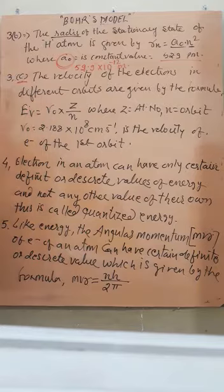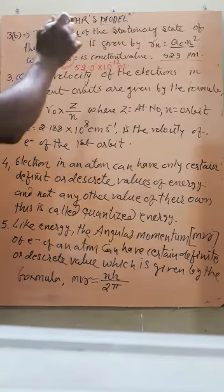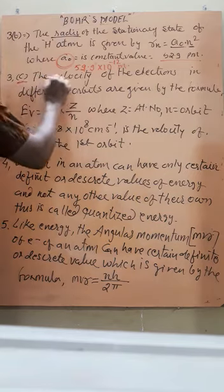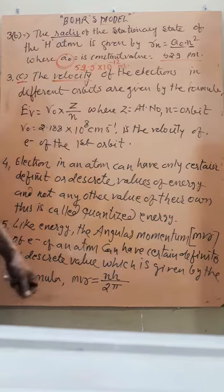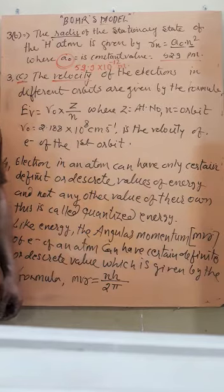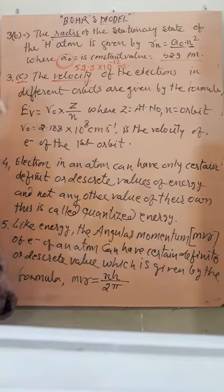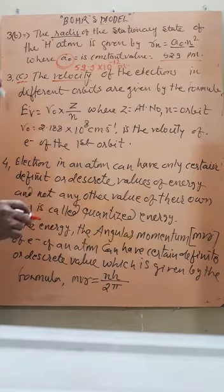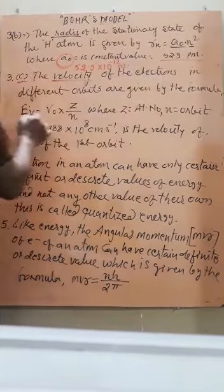Next one, that is number 3. First time we discussed energy, second time we discussed radius. Now, velocity also plays a very important role because the electron is revolving around the nucleus, so it must have some certain velocity. The velocity is given by the formula.